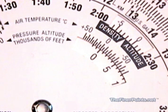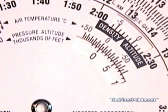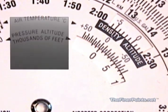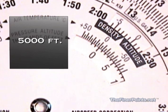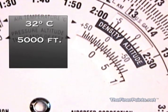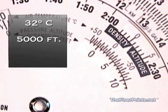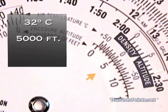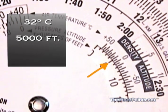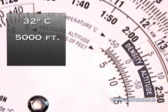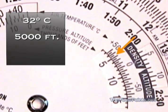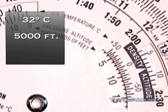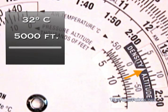Let's try an example. Let's imagine that your pressure altitude is 5000 feet and the outside air temperature is about 32 degrees. You'll set the 5000 here opposite 32 degrees — and there will be some approximating when using the E6B — but you'll read the resulting density altitude here at just over a thousand feet.